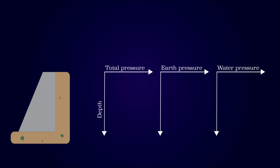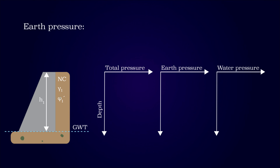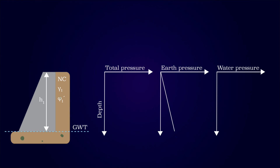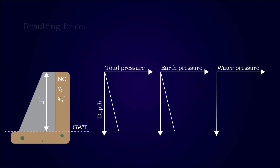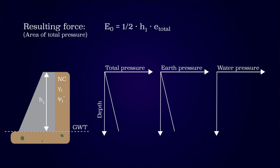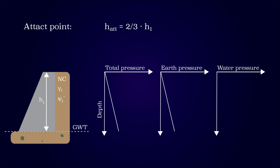In the first example scenario, we consider a normally consolidated soil behind a retaining wall where the groundwater table is located below the retaining wall, and the lateral water pressure is neglected. The lateral earth pressure is determined by calculating the effective vertical stress and multiplying by the at-rest coefficient, which is based on the effective friction angle for the deposit. The resulting force is equal to the area of the total pressure, and when considering a linear distribution, the calculations are simplified to the area of a triangle.